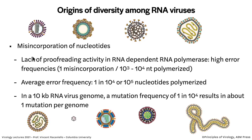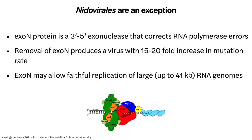The exception to lack of proofreading is the Nidovirales, including coronaviruses. They have a protein called ExoN (NSP14), which is an exonuclease that chews the end of RNA from the 3' to 5' direction. If it senses an error, it cuts it out and the polymerase fixes it — an error-correcting protein. NSP14 is poised just downstream of the polymerase. Drugs that are mutagens or base analogs are difficult to make because ExoN will remove them. Remdesivir is one of the few that works. If you knock out ExoN, you can make infectious virus but it has a 15 to 20-fold increase in its mutation rate and is not very fit.